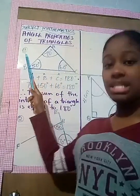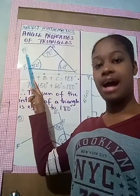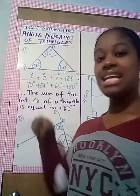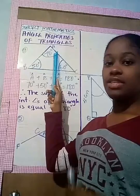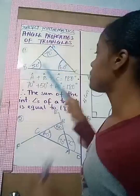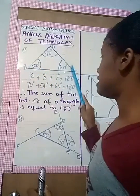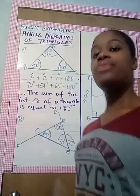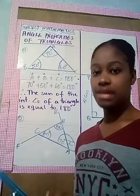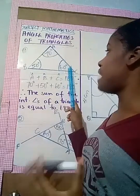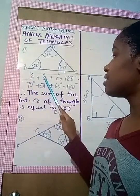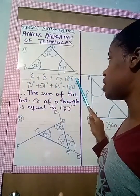The first property we're going to look at has to do with the interior angles of a triangle. By interior I mean the angles that are formed inside of the triangle. So here we have a triangle drawn. Let's assume that angle A is 70 degrees, angle B is 50 degrees, and angle C is 60 degrees. If we add all those angles together our answer would be 180 degrees, and this applies to all other triangles. So angle A plus angle B plus angle C equals 180 degrees.